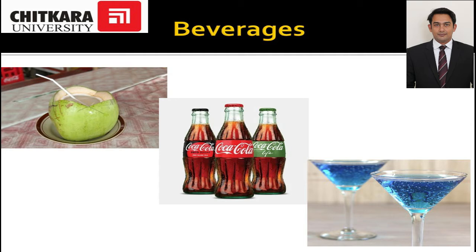On the image you can see there are three images. One is coconut water, second is Coca-Cola, and third is a mocktail. Coconut water is a kind of nourishing beverage. Coca-Cola is a type of carbonated beverage which contains carbon dioxide and water. Mocktails are mixed drinks made by one or two different kinds of ingredients.